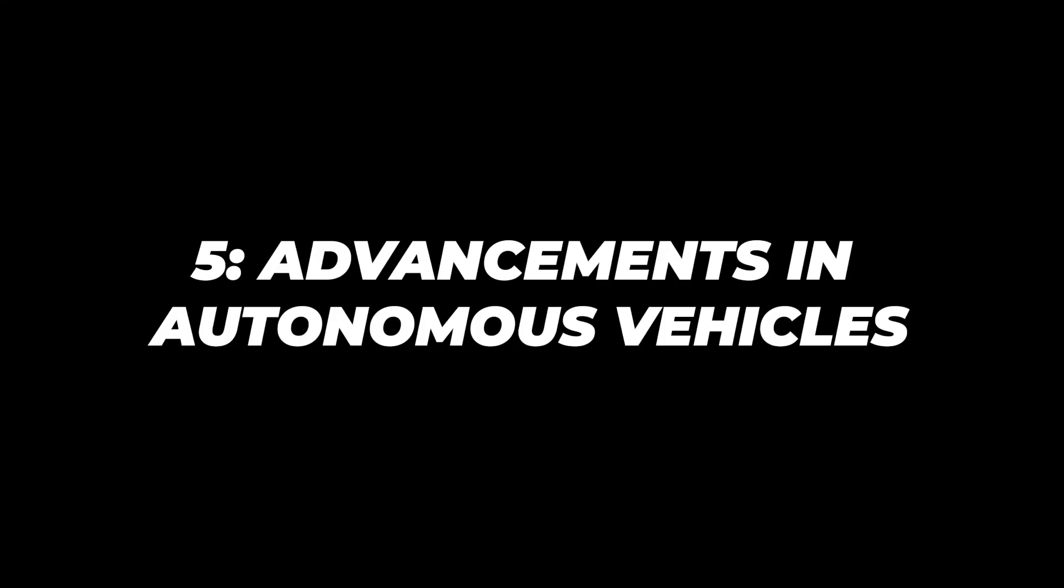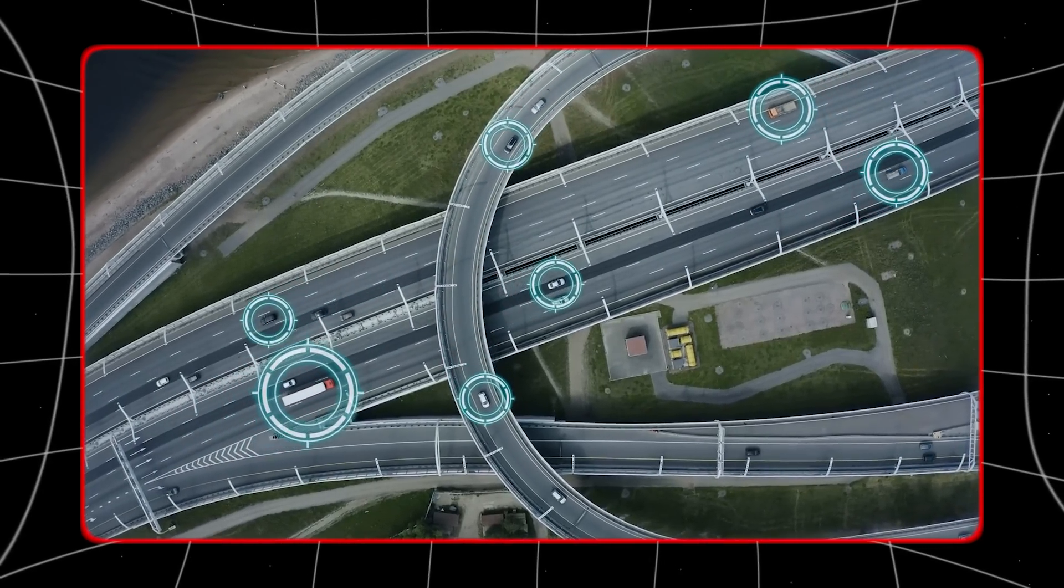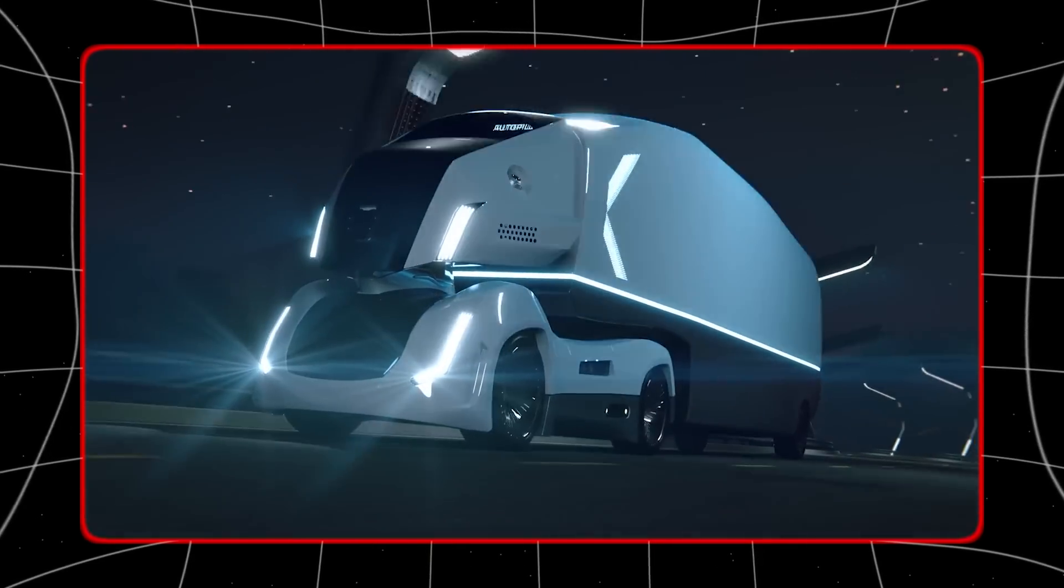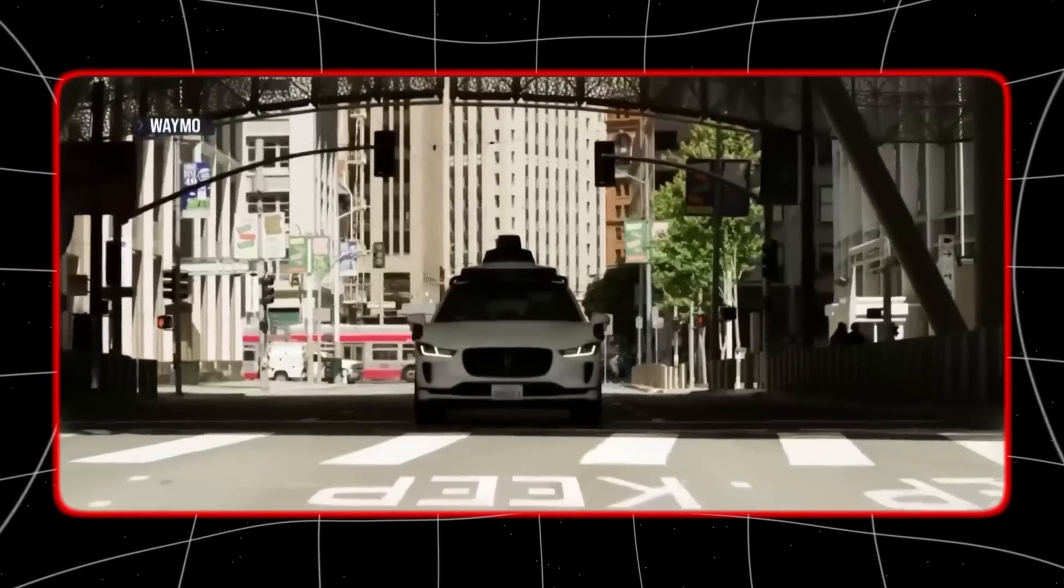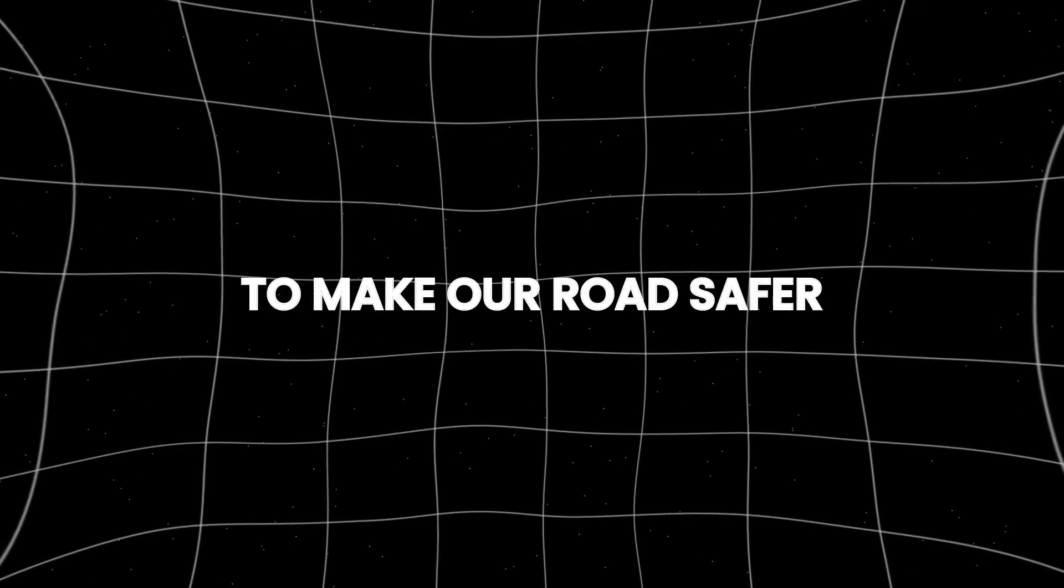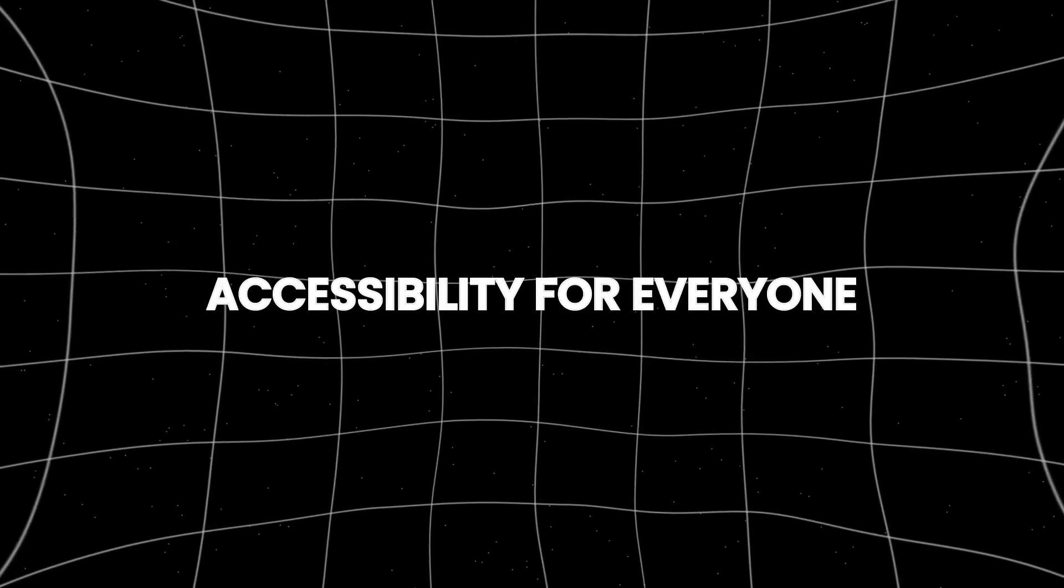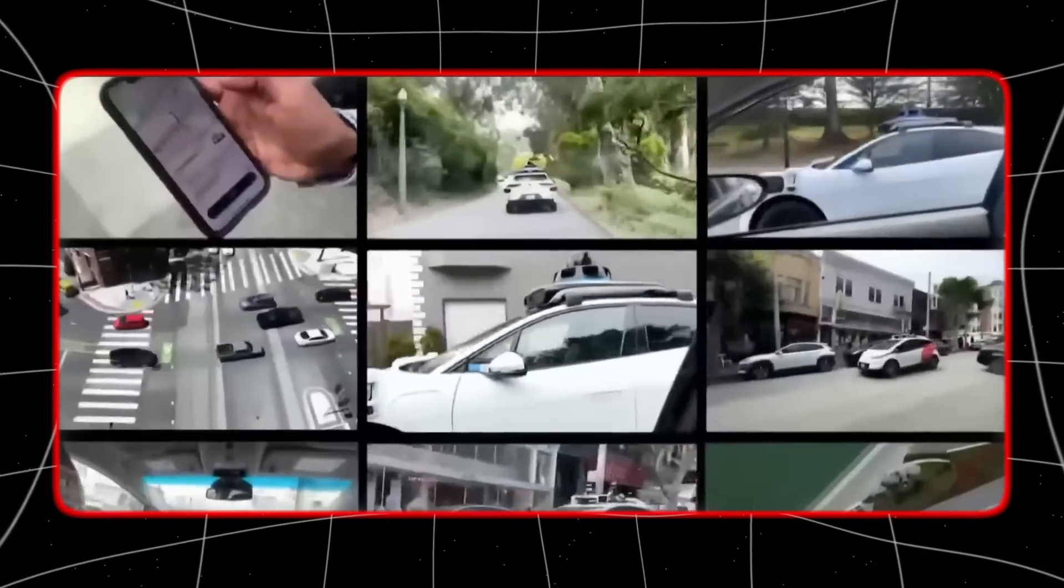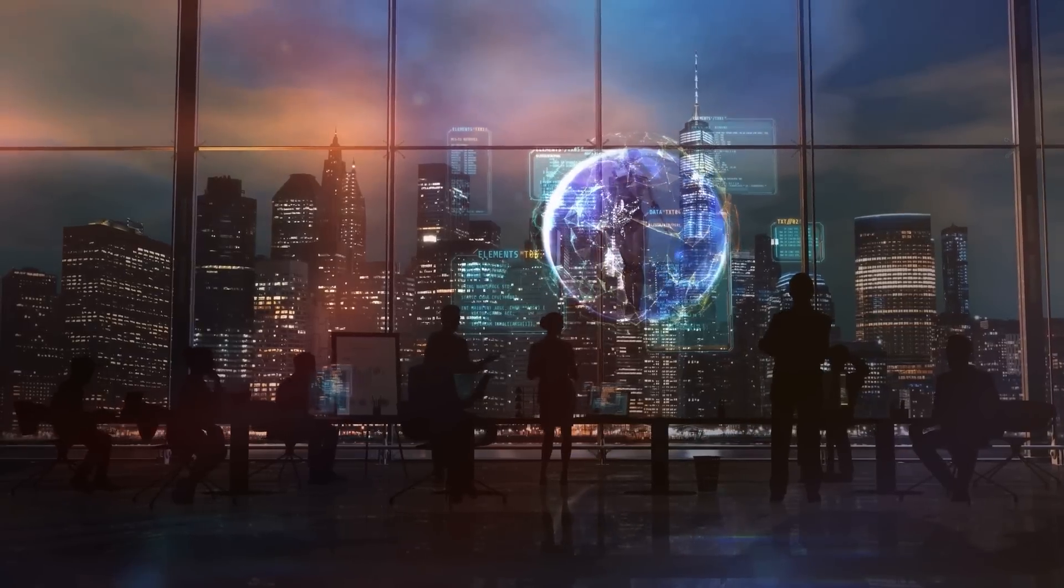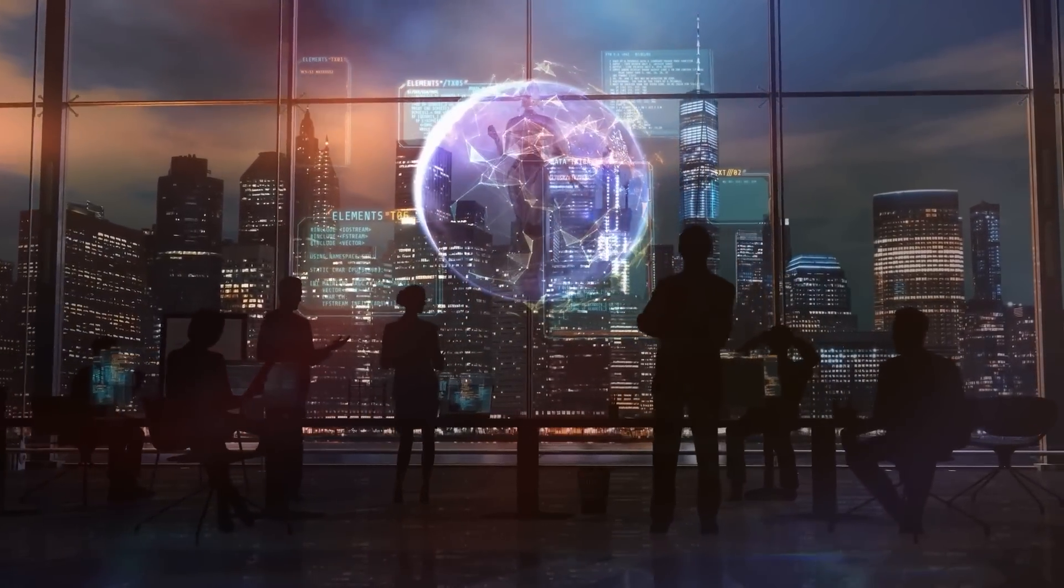Number five, advancements in autonomous vehicles. Significant progress in artificial intelligence will transform how vehicles operate independently by 2030. Notably, companies such as Tesla are at the forefront of this evolution towards fully self-driving vehicles. These advancements aim to make our roads safer, lessen traffic jams, and improve transportation accessibility for everyone. The rise of autonomous vehicles will have far-reaching impacts beyond just transportation.